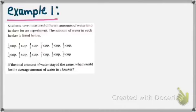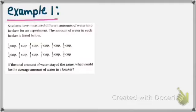This is example number one. Students have measured different amounts of water into beakers for an experiment. The amount of water in each beaker is listed below, and here I see various different measurements listed all in the unit of cups. If the total amount of water stayed the same, what would the average amount of water be? I need to find the average amount of water. I have lots of cups here, and the amounts are all over the place, so I'm going to make myself a line plot, which will help me see what's what and help me find the average amount of water in each beaker.